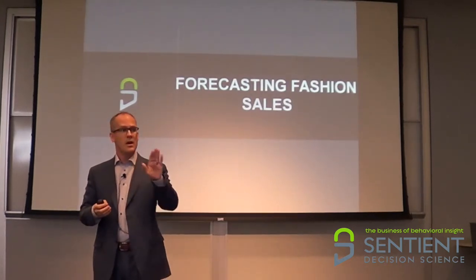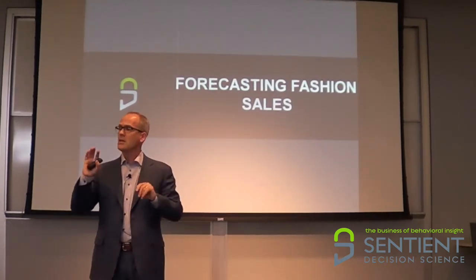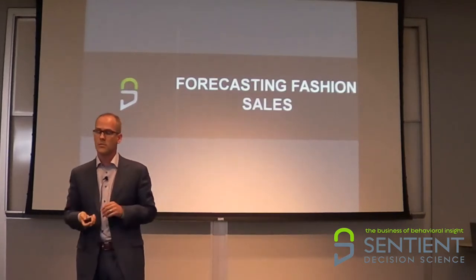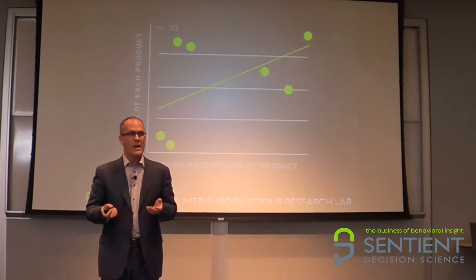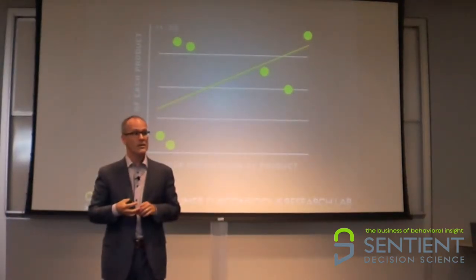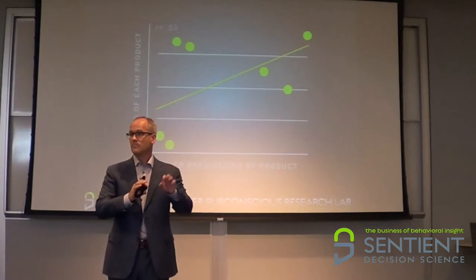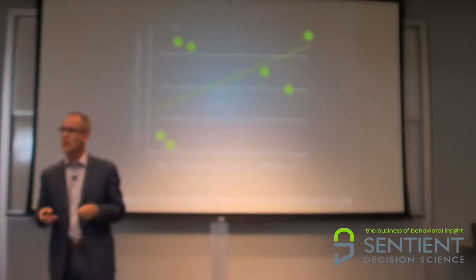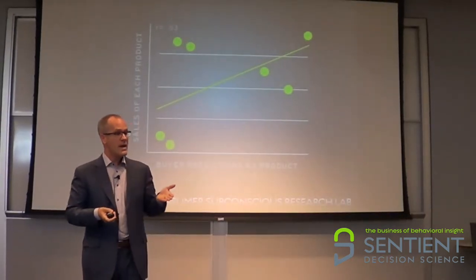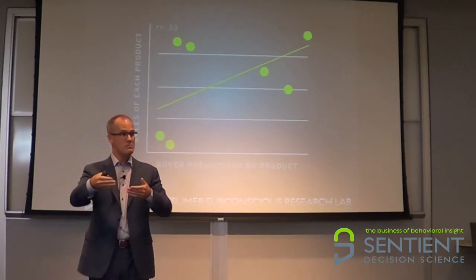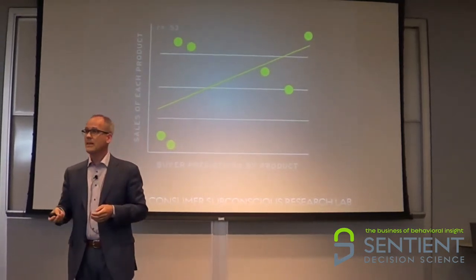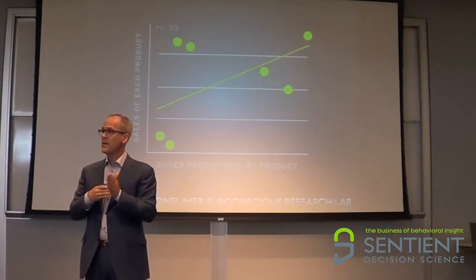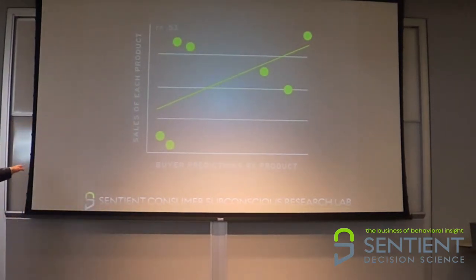We said, let's do this — let's measure a conjoint, so we have the rational, the conscious, and let's do our implicit associations so we have the System 1 processing as well. We're going to do this before you go to market. So we made the predictions in April; they went to market in May. The product had already been bought and stocked. We asked for the buy on each product — how much they spent on each product going to market — and compared the buy to the actual sales. The buyer predictions are along the x-axis, and the sale of each product is along the y.